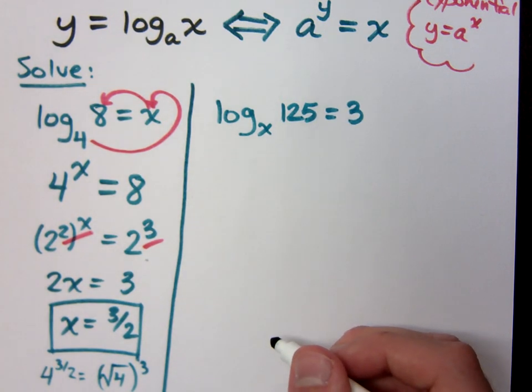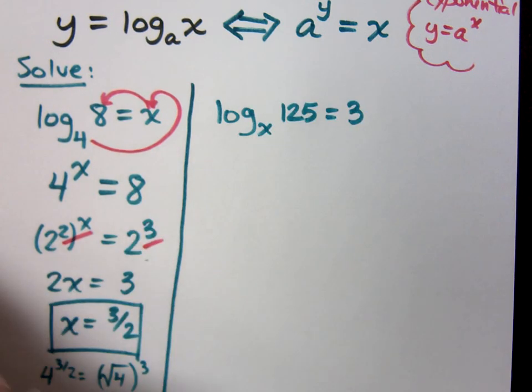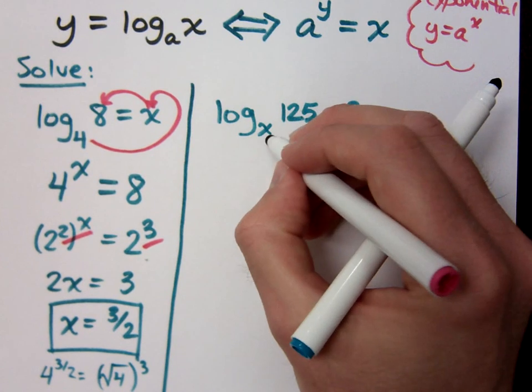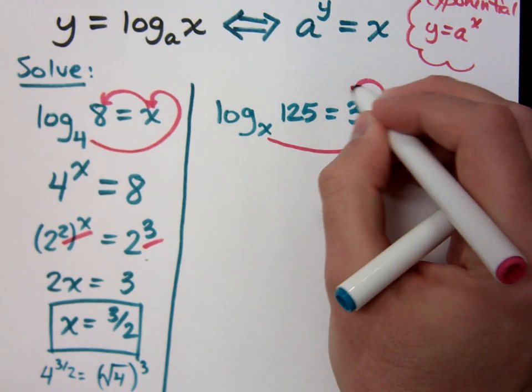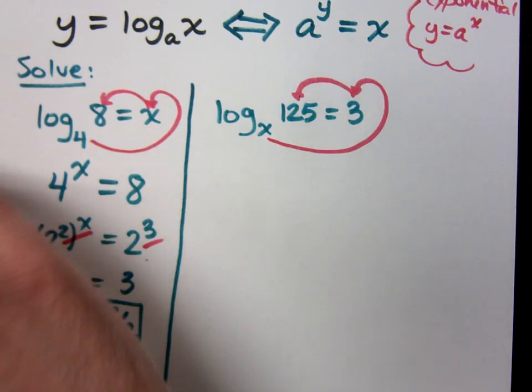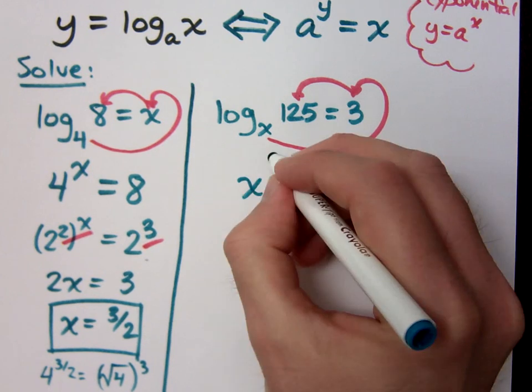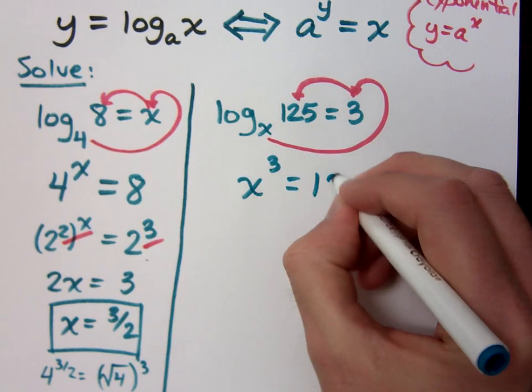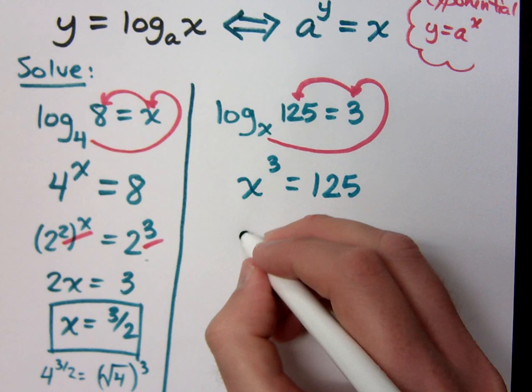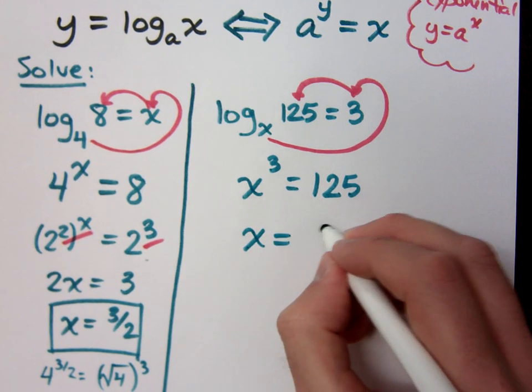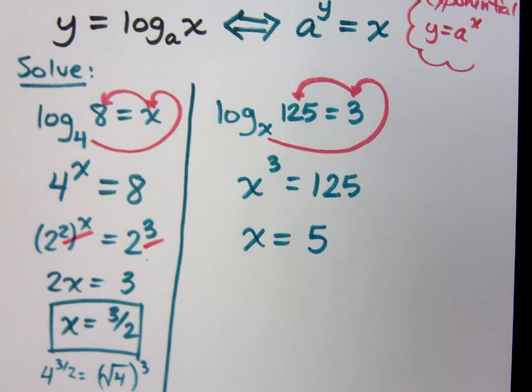So did you do the loopy loop on that, Doug? I did the loopy loop. So that means x to the 3rd equals 125. We should be able to look at this and solve this and say x equals... That's the only real solution for this guy. x to the 3rd equals 125, x equals 5.